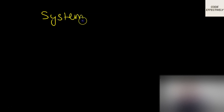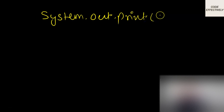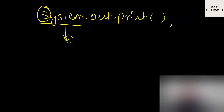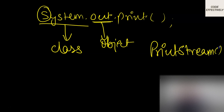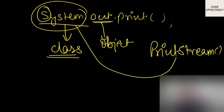So let's start. What does System.out.print basically mean? System is a class — since 'S' starts with a capital letter, System is a class. 'out' is an object — out is an object of the PrintStream method. So in the class System, we have a method named PrintStream.